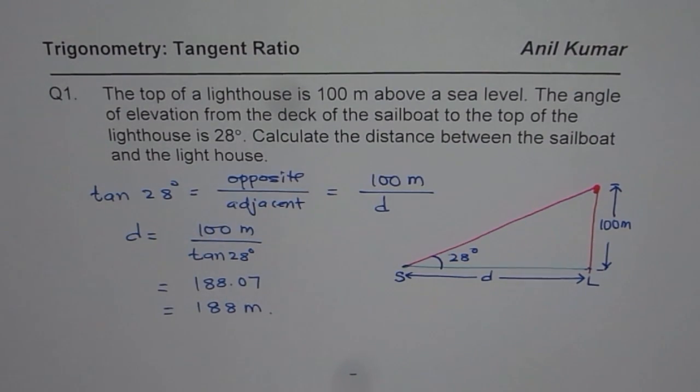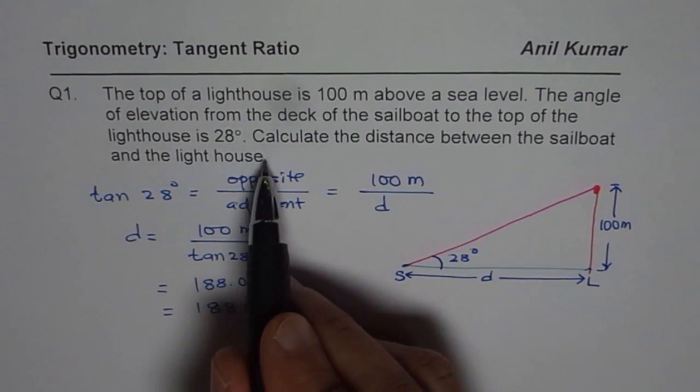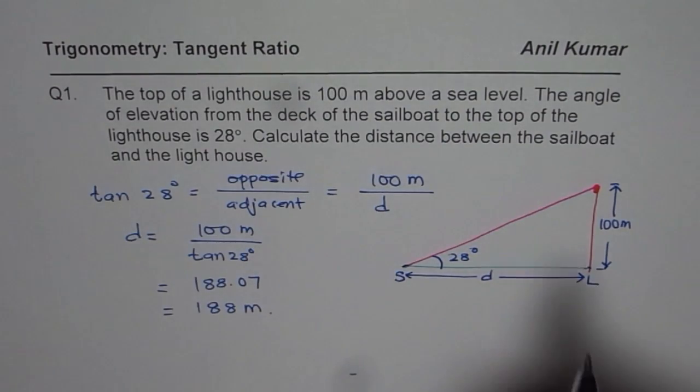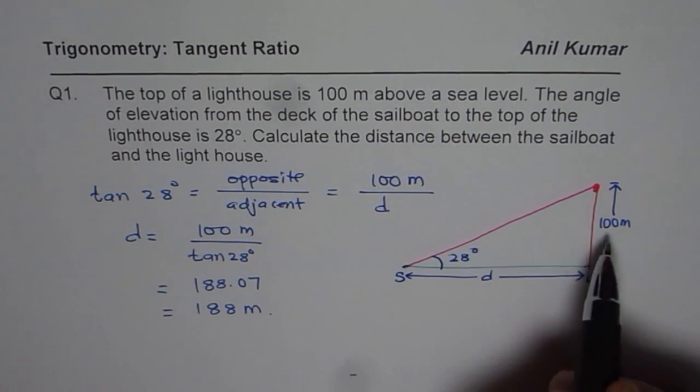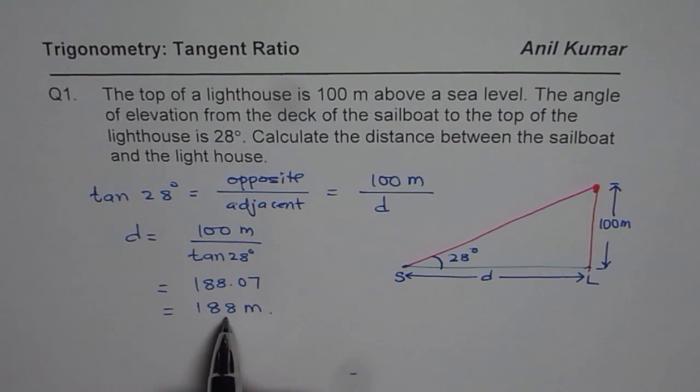Do you get the point? So if it is not given to you, till what decimal place, in that case you should look for the other units. The distance is given to you as a whole number. Therefore, you should round this to a whole number itself.